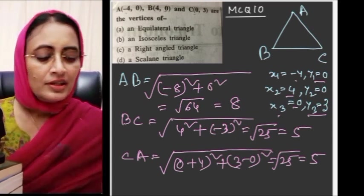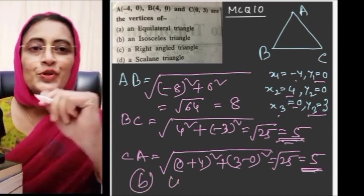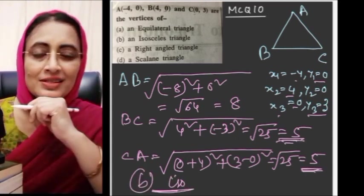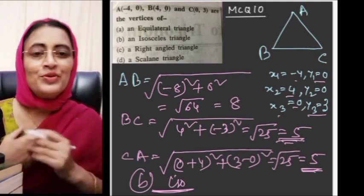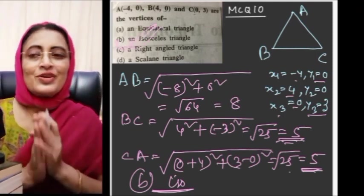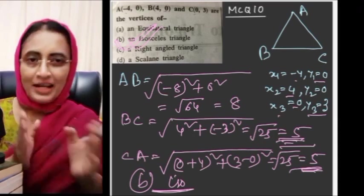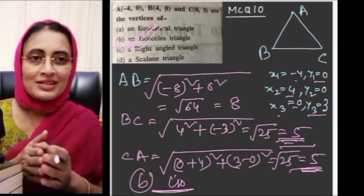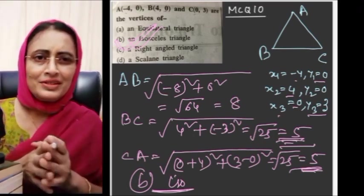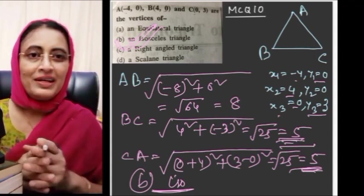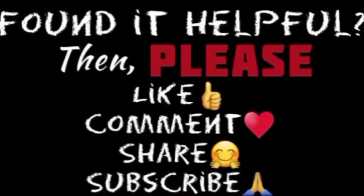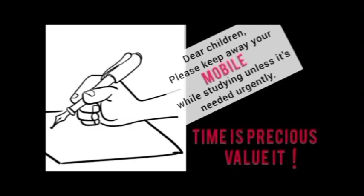Two sides BC and CA are equal to 5, so the triangle is isosceles. Option B is the correct answer. With this we have finished our MCQ session. In our next video we will start a new chapter. I hope you enjoyed the session and learned from it. Thank you for watching, see you in my next video. Till then, take care and keep practicing.